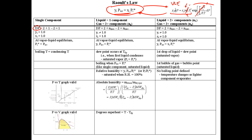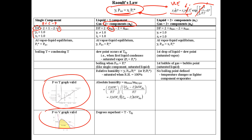For a single-component system, the degrees of freedom analysis gives F = 2 + C − P = 2 + 1 − 2 = 1, so we can specify either temperature or pressure and calculate the other. For two-plus components in the gas, you have more degrees of freedom and may need to specify temperature, pressure, or some vapor mole fractions. The dew point occurs at T_dew when the first liquid condenses, giving saturated vapor; boiling occurs when P_total equals the liquid vapor pressure.